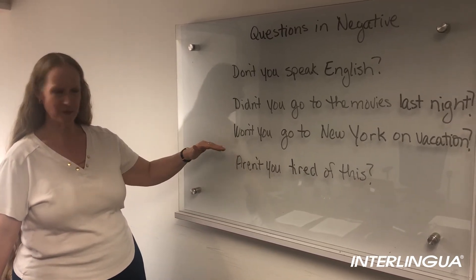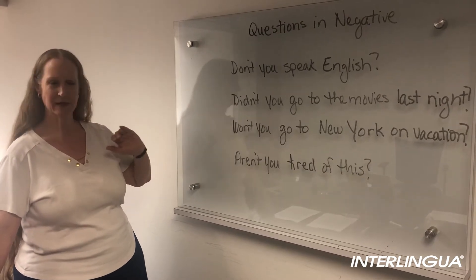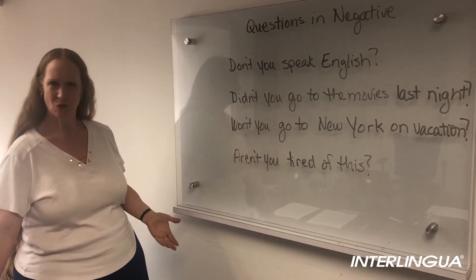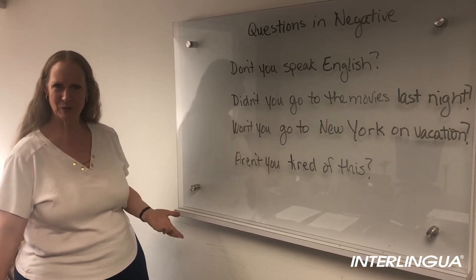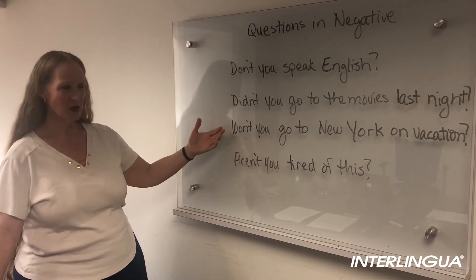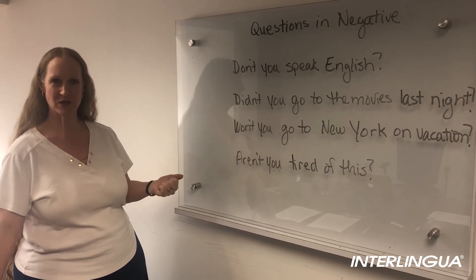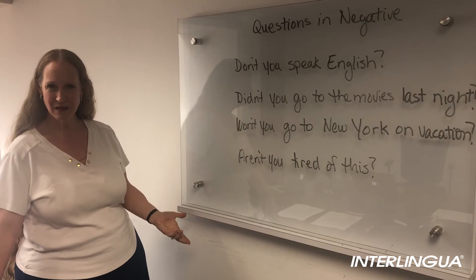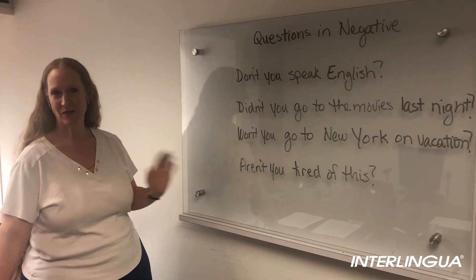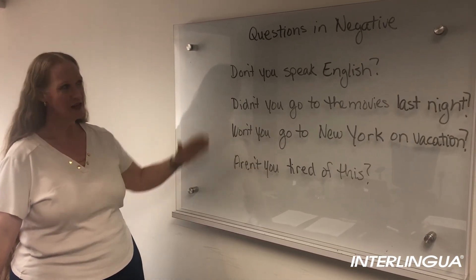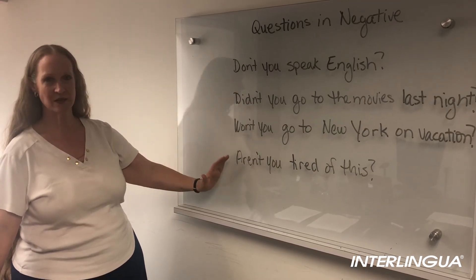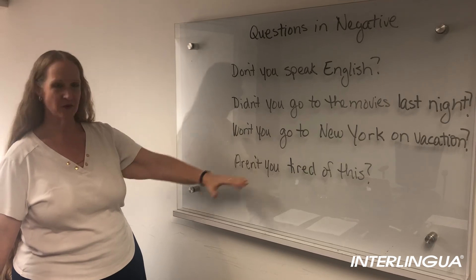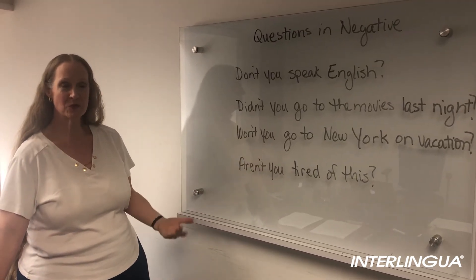Imagine you're planning a trip and you're going to go to New York and then in the end you don't go. I said, won't you go to New York on vacation? Didn't you plan to do that? So these questions I ask when I'm surprised about something, I'll start with a negative. For example, aren't you tired of this? I'm surprised, but okay, obviously you're not. So these are questions we can ask starting with a negative auxiliary or a negative verb to be when we're surprised about something.